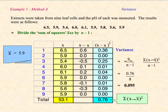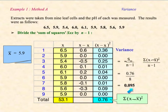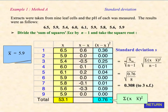For statistical reasons, if we take SXX — the sum of the squares — and divide it by N minus 1, it gives us the variance, as opposed to N which gave us the mean squared deviation. So dividing by N minus 1 gives us the variance, and that gives us 0.095. If we then go ahead and square root the variance, we get the standard deviation. So SXX divided by N minus 1, square rooted, gives us the standard deviation.